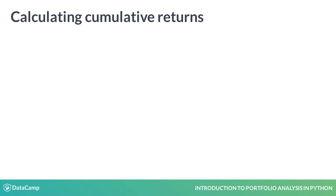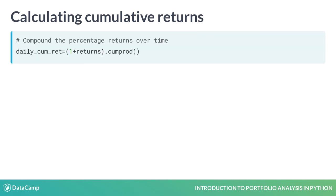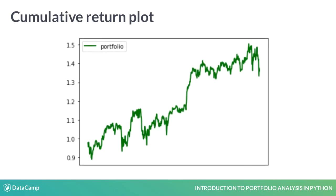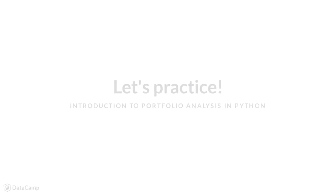Just like with interest in your bank account, returns compound over time. That means you are multiplying percentage change over percentage change. You therefore need to use the cumulative product function like this. 1 plus the daily return is your multiplication factor over time, just like with compounding interest. Now let's plot it — and there you have it: your daily cumulative returns of your portfolio containing Apple, Amazon and Tesla stock.